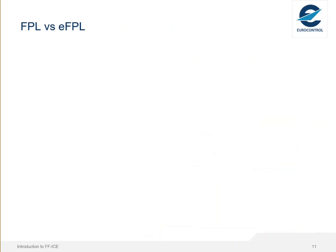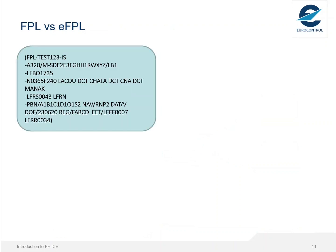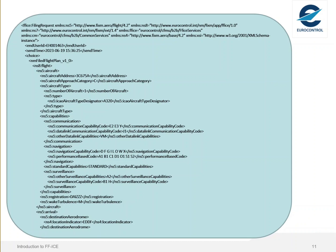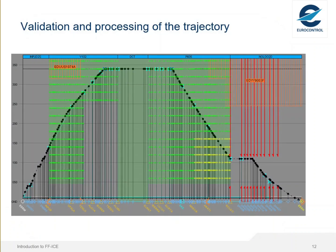Comparing FPL with eFPL: the ICAO FPL 2012 is relatively short and human-readable, while the eFPL is much bigger — the screenshot shows only a tiny part of its content. This is a vertical view of an IFPS-processed eFPL. The light blue crosses along the flight profile represent the 4D points, and the black line shows the trajectory.